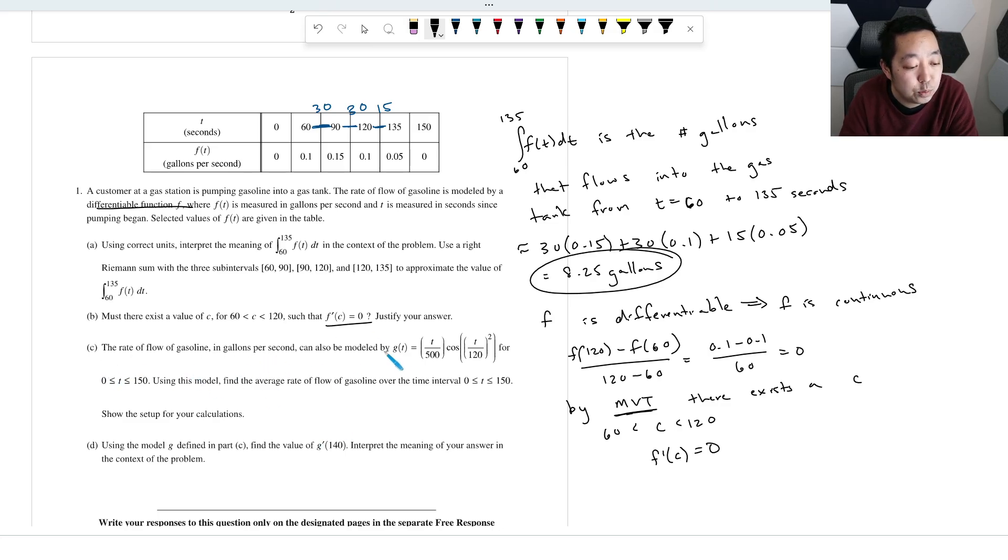The rate of flow of gasoline in gallons per second can also be modeled by this equation for 0 to 150. Using this model, find the average rate of flow of gasoline. So they want the average of the rate of flow. So if I want the average value, I want to average from 0 to 150 this function, because I want the average of G(t), and then I'm going to divide it by the interval width.